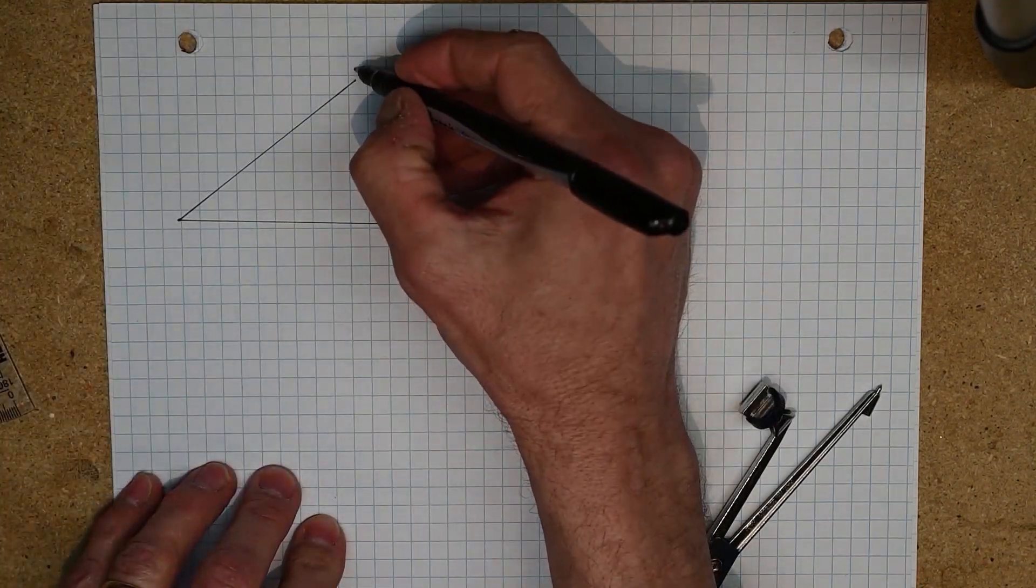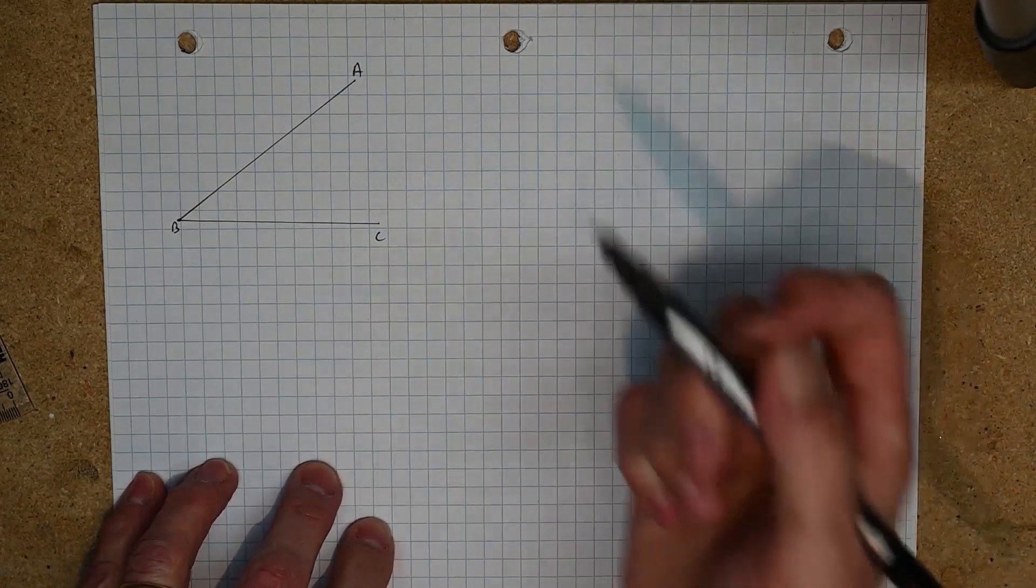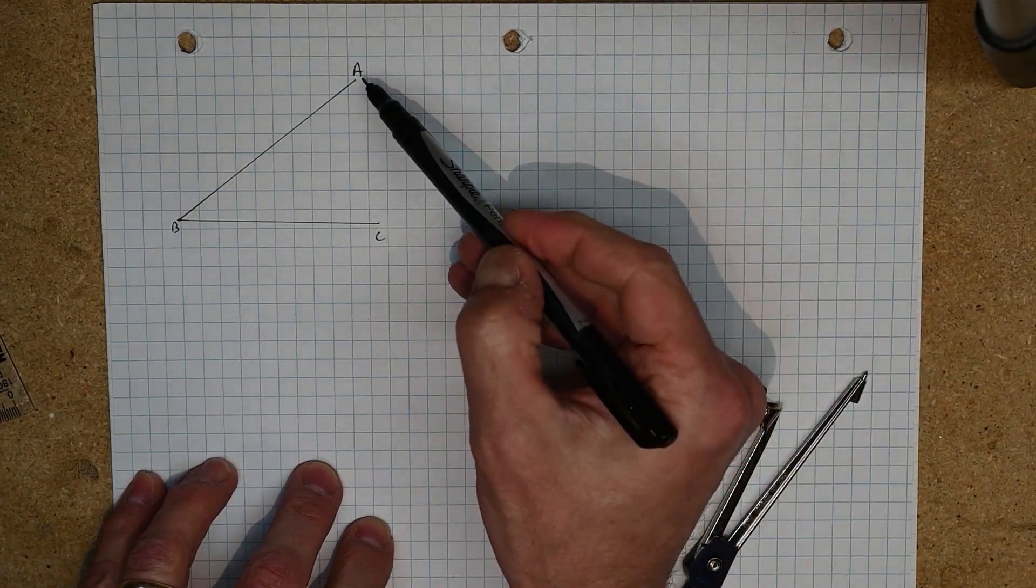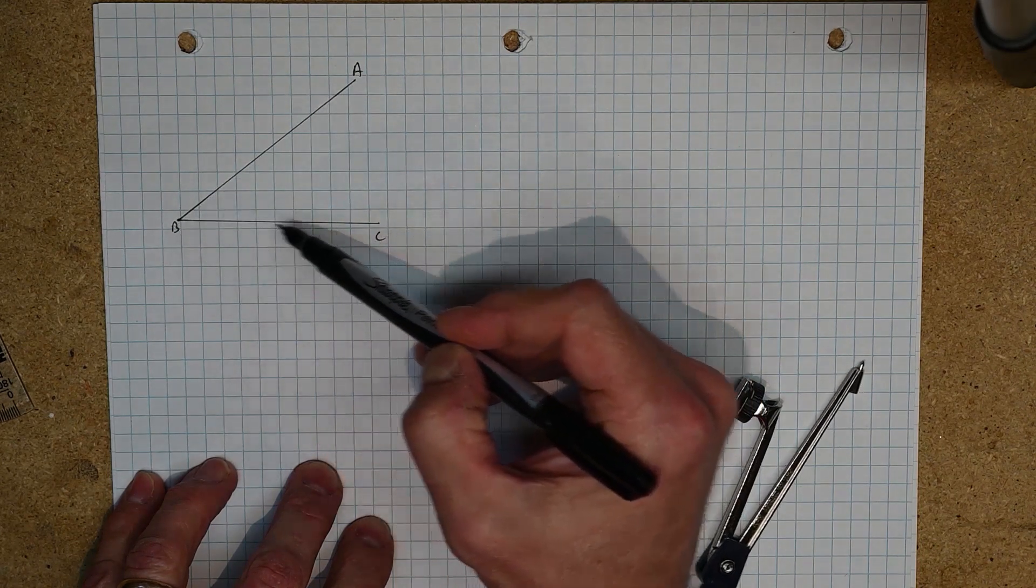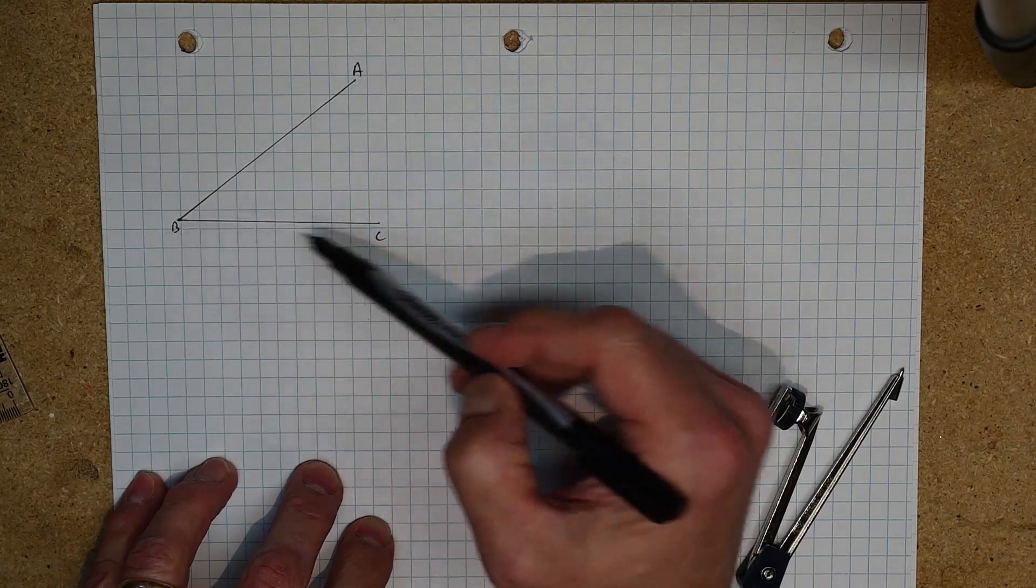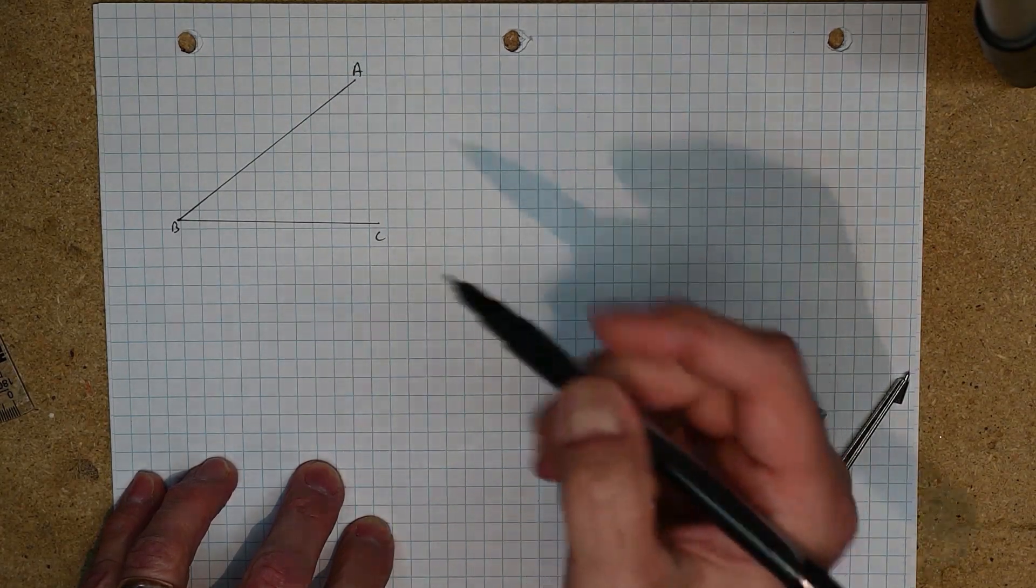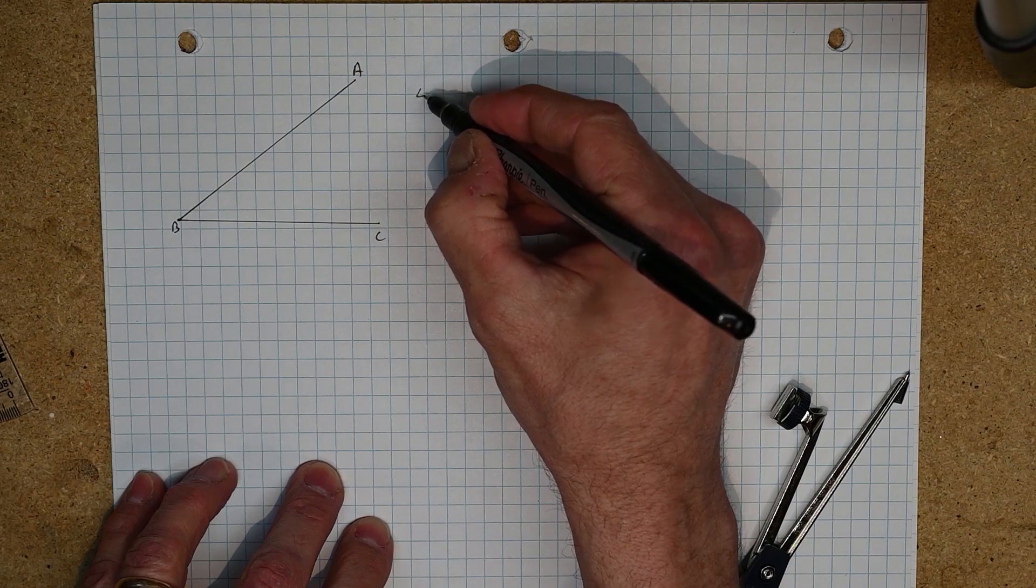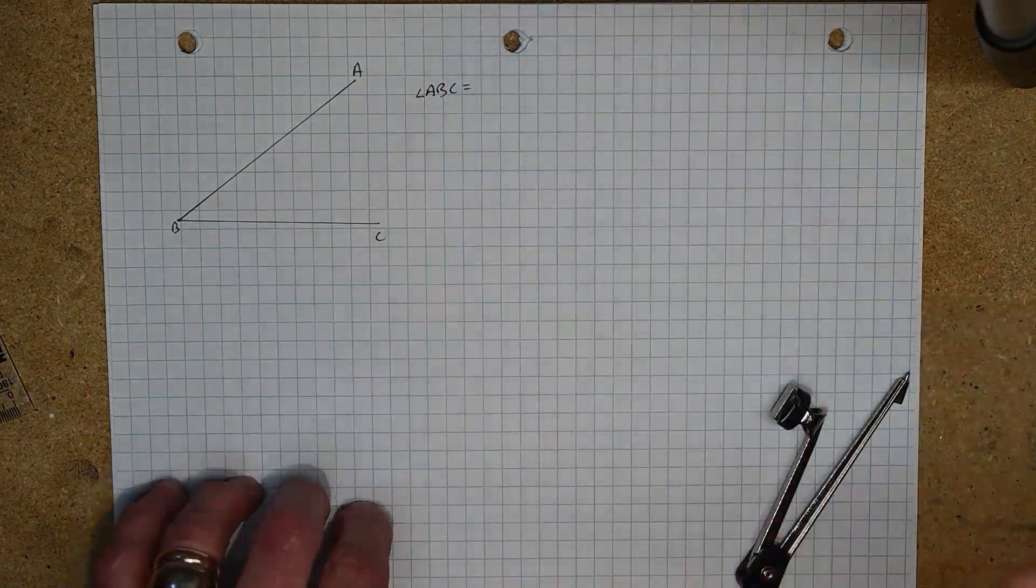And we'll call this ABC. The way that we name angles is to start on one arm of the angle, move toward the center and come out, so you could call this ABC or you could call this CBA. It really doesn't matter. I'm going to call it angle ABC and then we have to measure this.